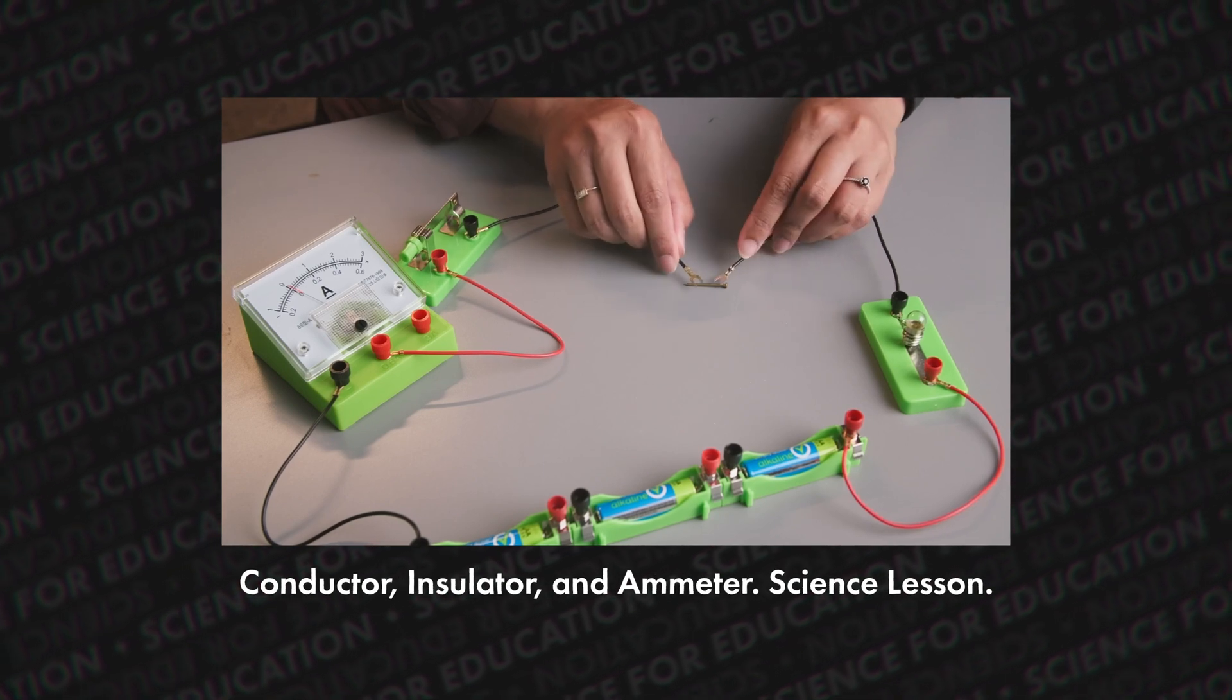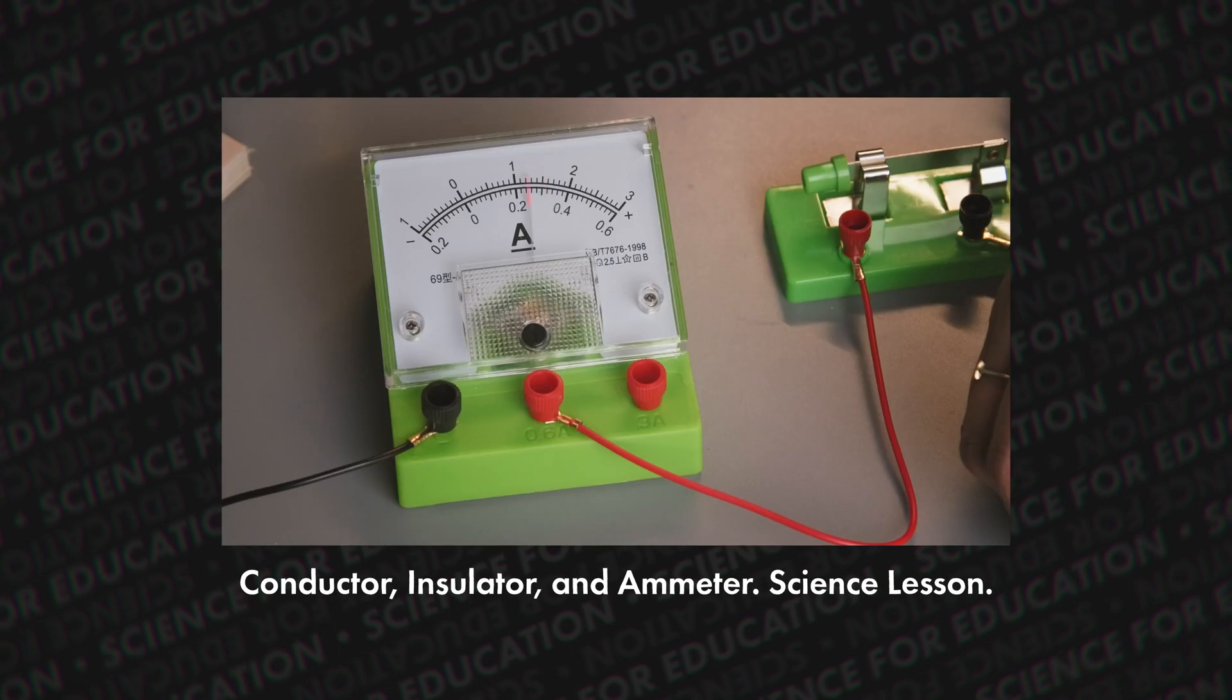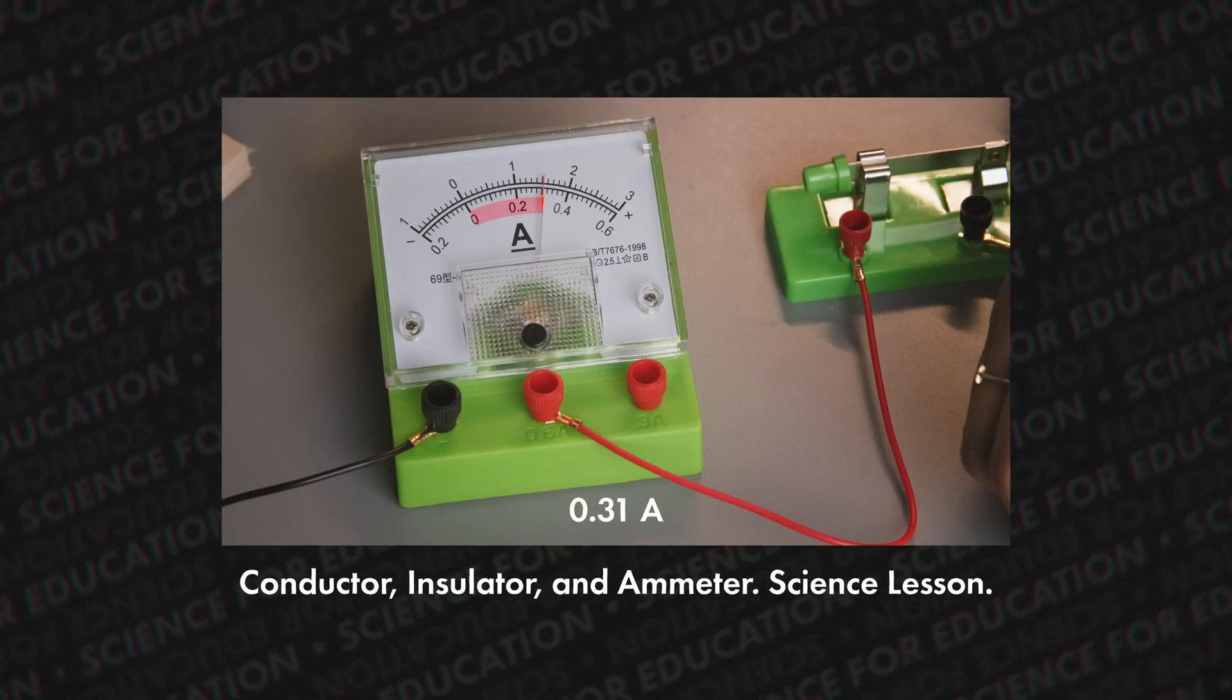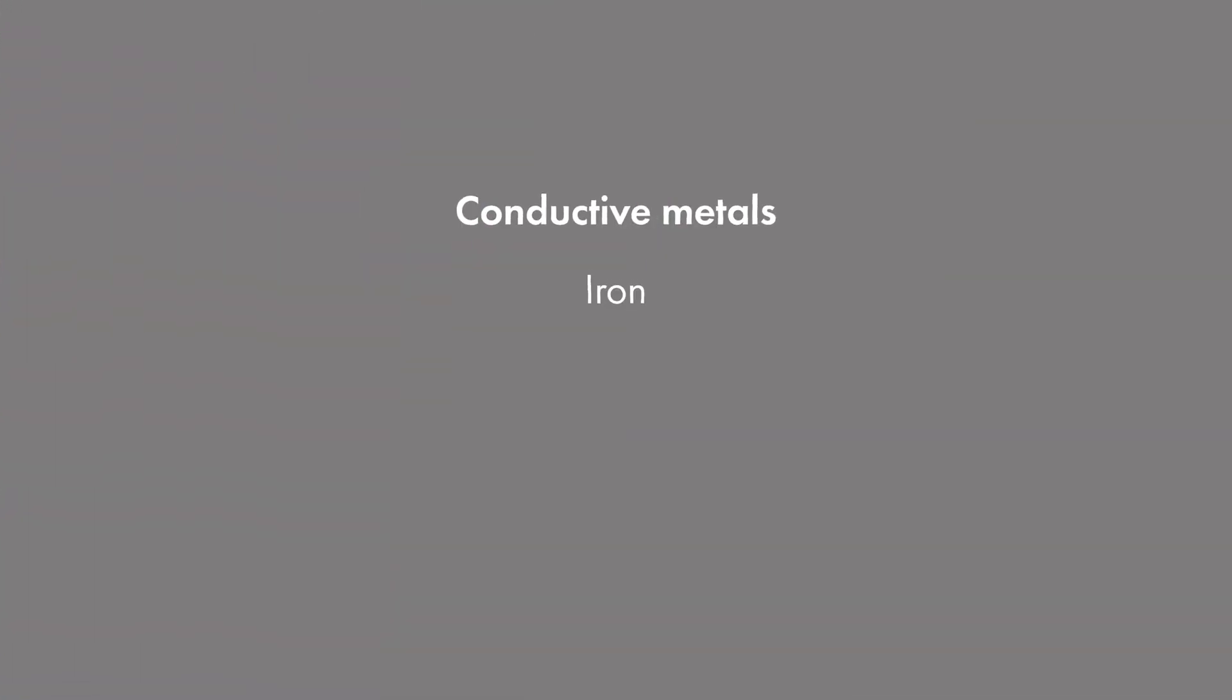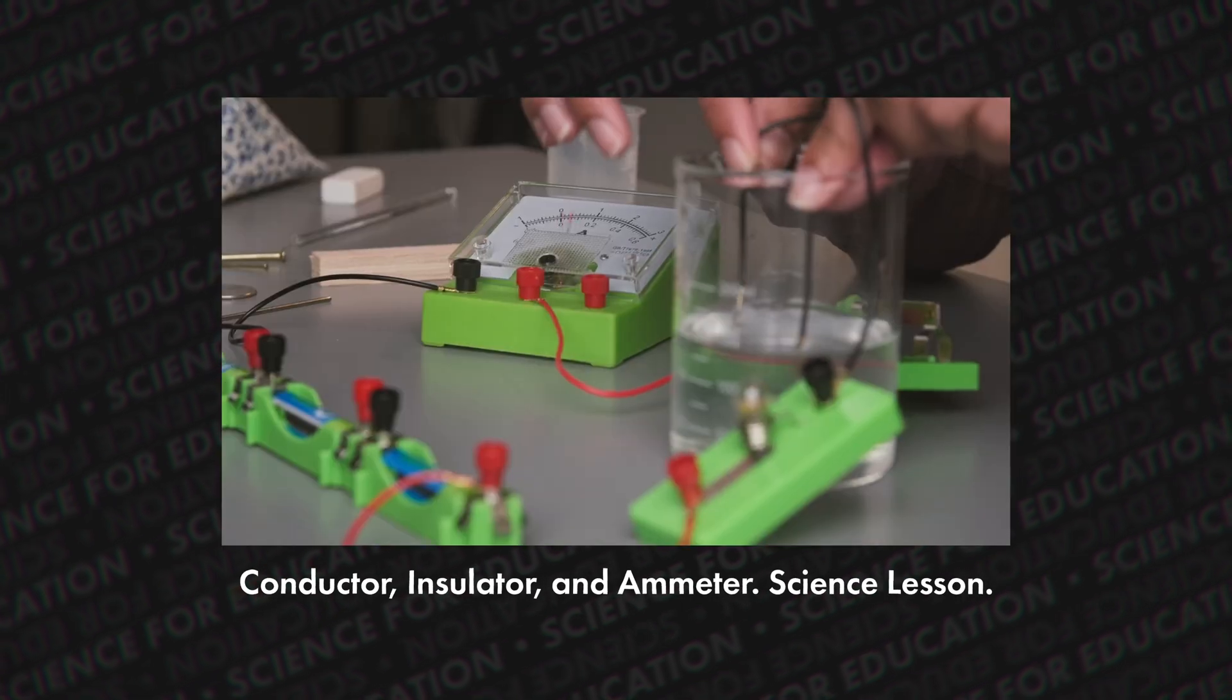In our previous videos we've talked a lot about electricity and that there are conductors and insulators. Some conductors are made from metals such as iron, copper, silver, etc., and some are made from ions such as salt water.